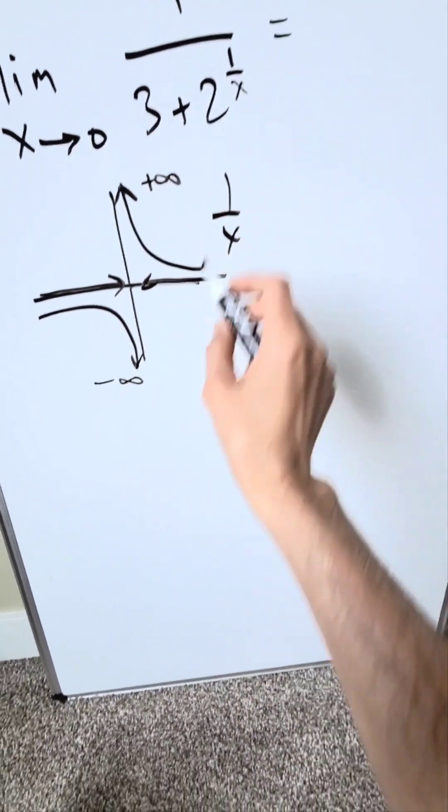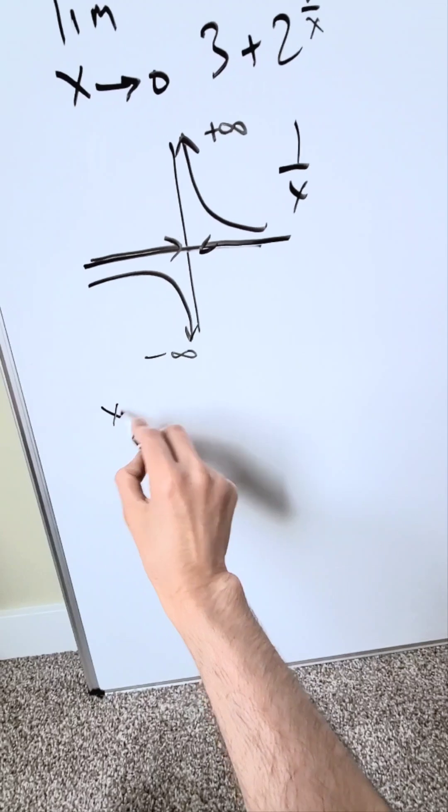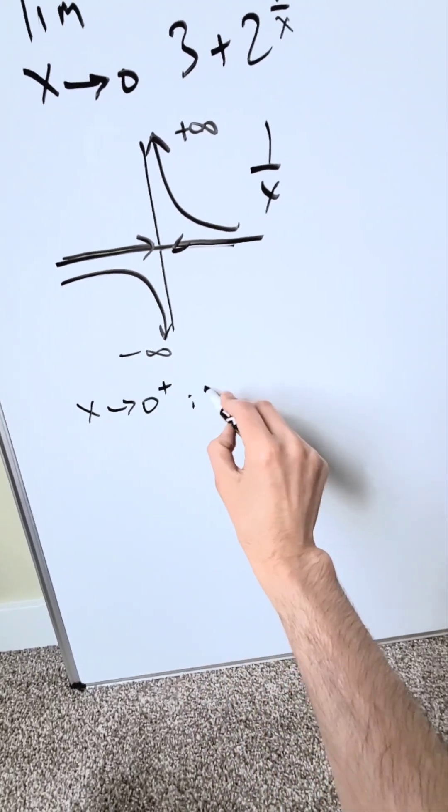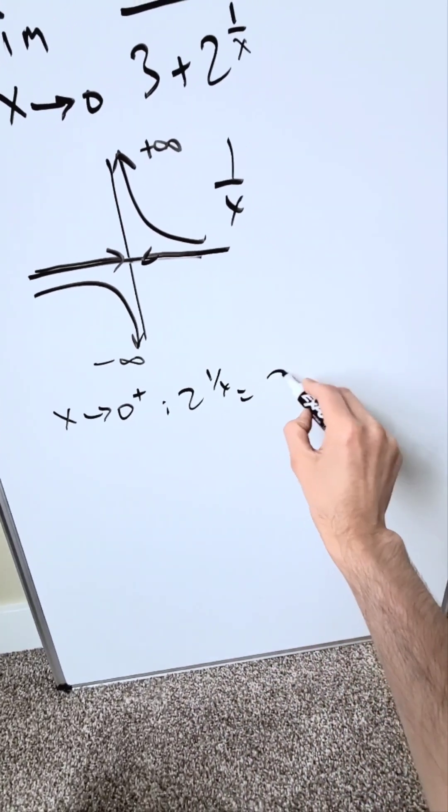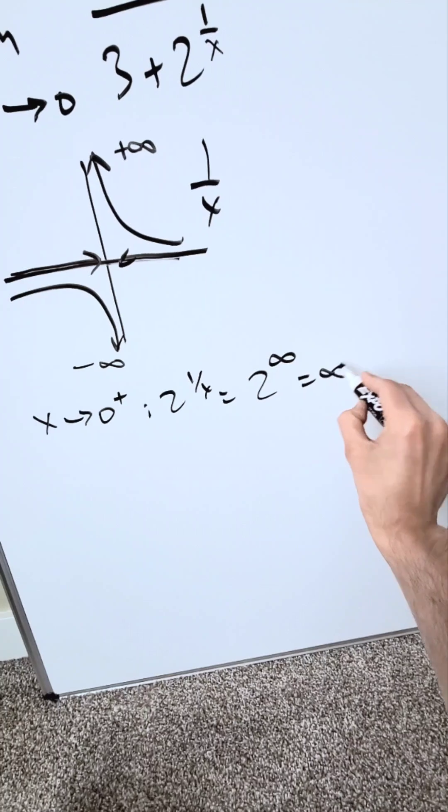Look here only at 2 to the power of 1 over x. From the right, this is how you represent it. 2 to the power of 1 over x is now going to be 2 to the power of infinity, which will be infinity.